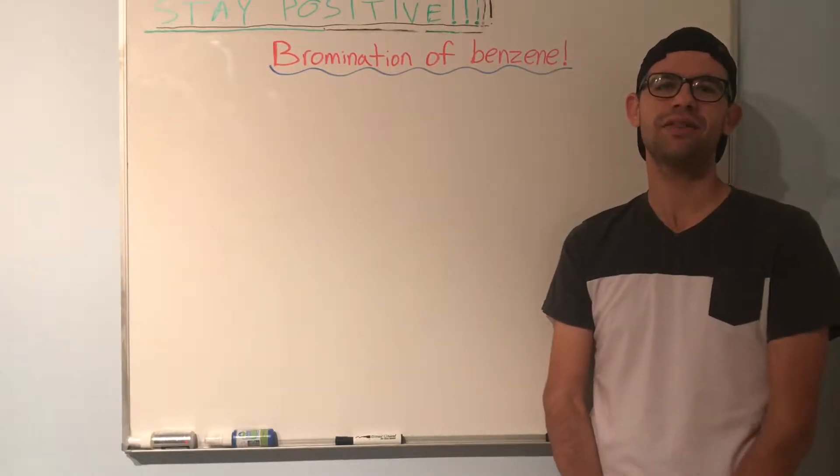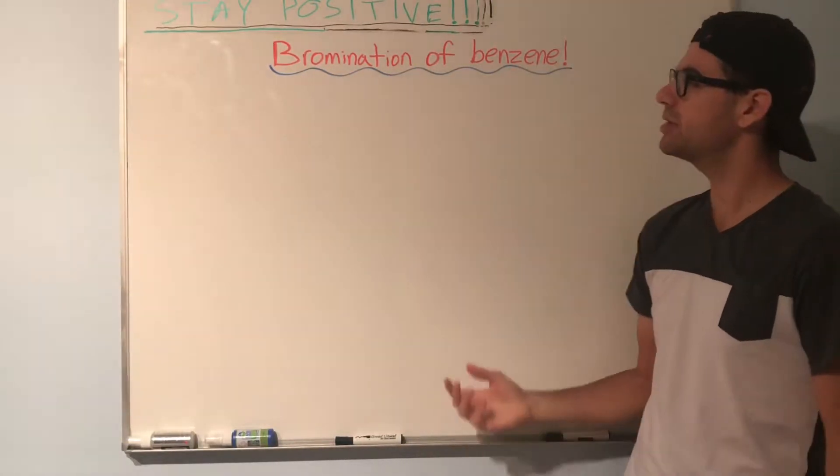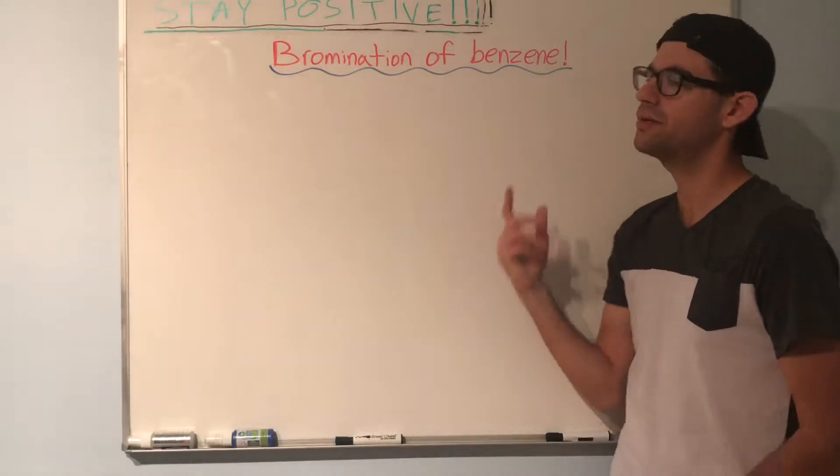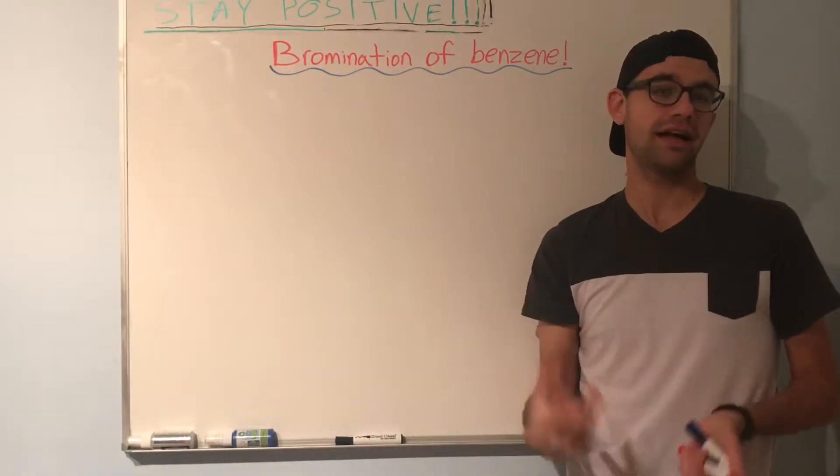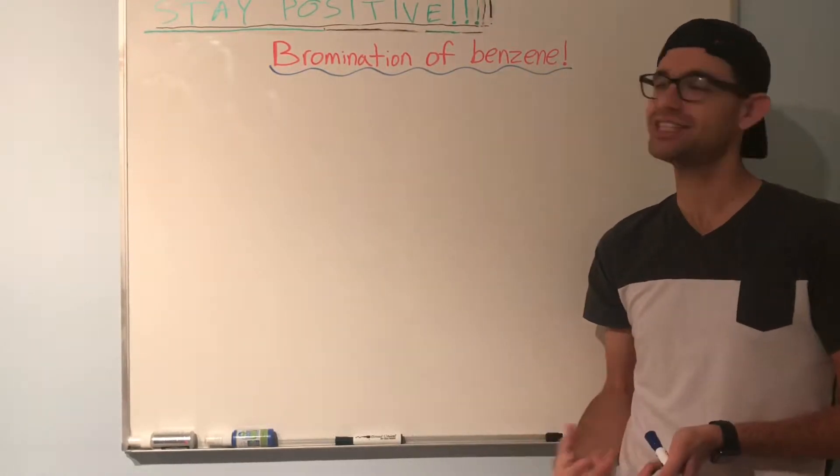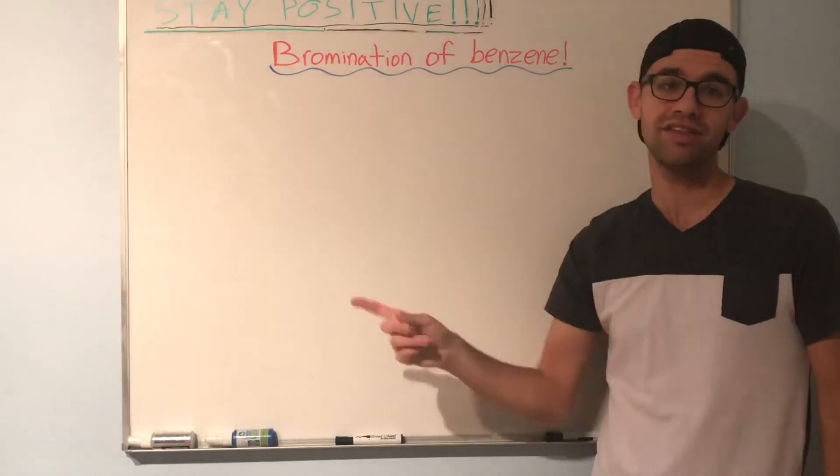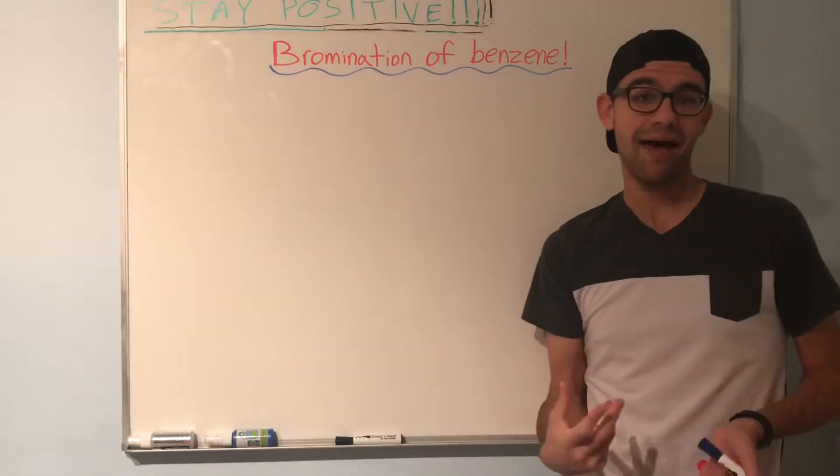Hey YouTube, how's it going? YakScience here with another OCHEM video. Today we're talking about bromination of benzene, which is a specific type of electrophilic aromatic substitution reaction that involves adding a bromine onto a benzene ring. Let's see how that happens.